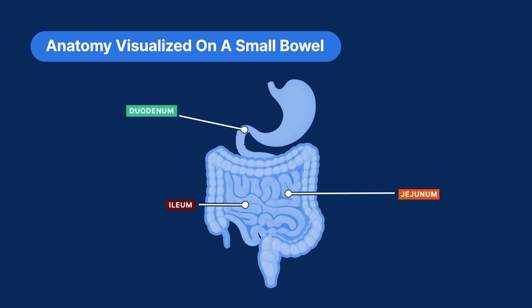The ileum, which is the third part of the small intestine, completes nutrient absorption, which includes vitamins and bile acids. The terminal ileum is the last part of the ileum before the ileocecal valve, which is located at the junction of the small and large intestines. The ileocecal valve prevents backflow and regulates the passage of material into the large intestine. In some cases, the colon may also be visible. The colon is responsible for reabsorbing fluids and electrolytes and transporting waste material to the rectum for elimination.